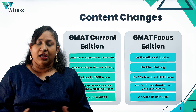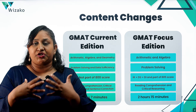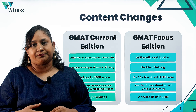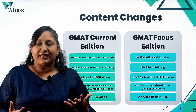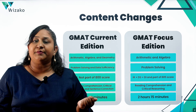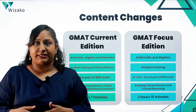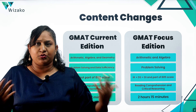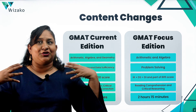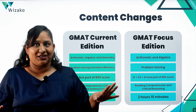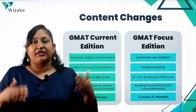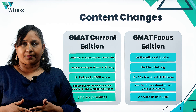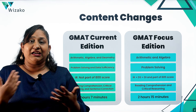Integrated Reasoning — or Data Insights as it's called in the Focus Edition — requires a combination of quantitative and verbal skills. You bring inference skills from Reading Comprehension and Critical Reasoning, and quantitative analysis and problem-solving skills from the Quant section, along with data literacy: your ability to read and process information presented in graphs and tables. If you are strong in only one of Quant or Verbal and can't combine the two, or don't want extra focus on graph-based questions, then look at the current version where IR is not part of the 800 score.